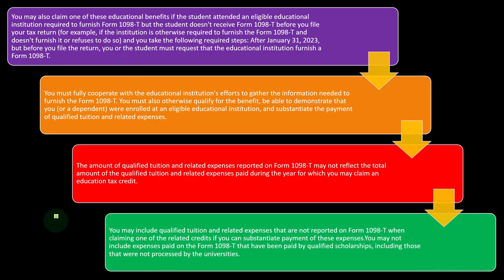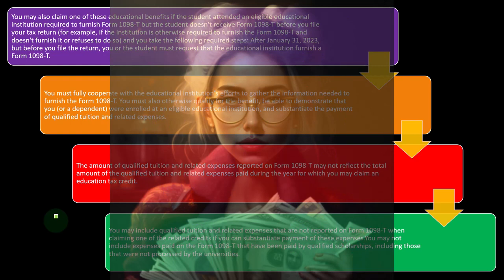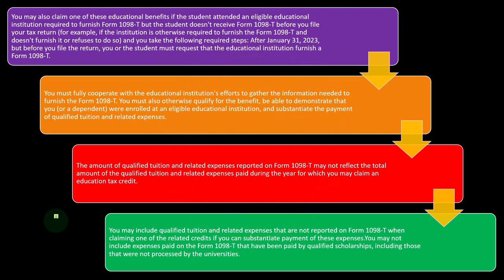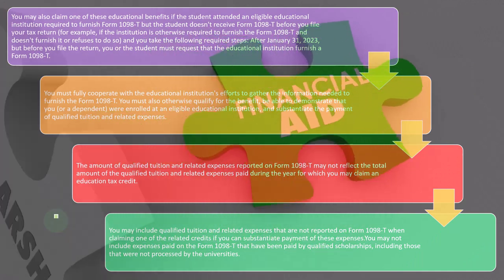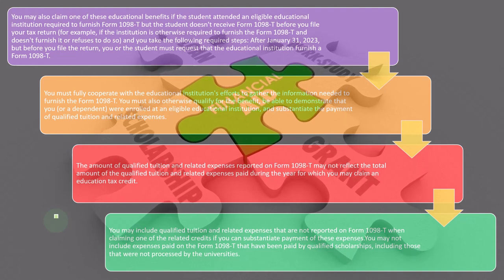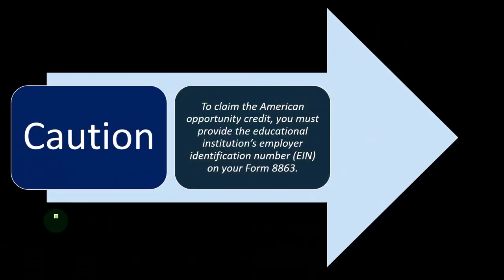You may include qualified tuition and related expenses not reported on Form 1098-T when claiming one of the related credits, if you can substantiate payment of these expenses. However, you may not include expenses on the Form 1098-T that were paid by a qualified scholarship, including those not processed by the university. Amounts paid by scholarship weren't really an expense to you, so you generally wouldn't get a credit related to them.